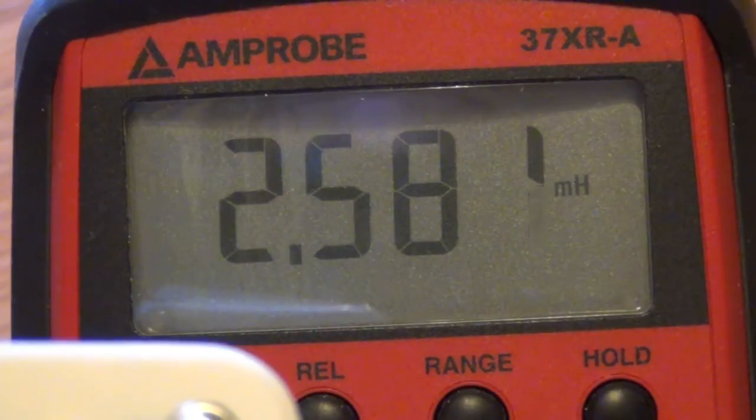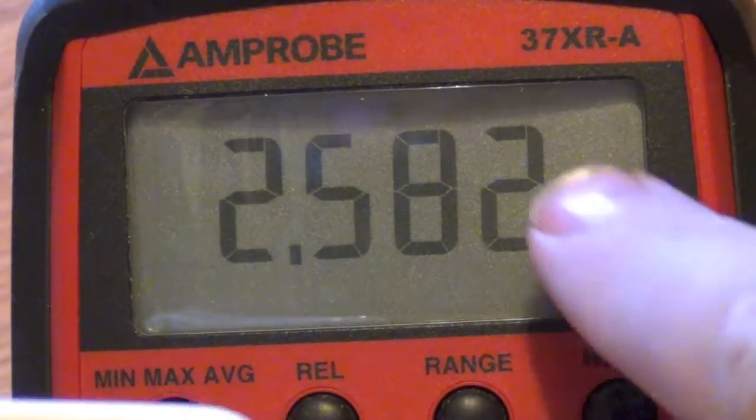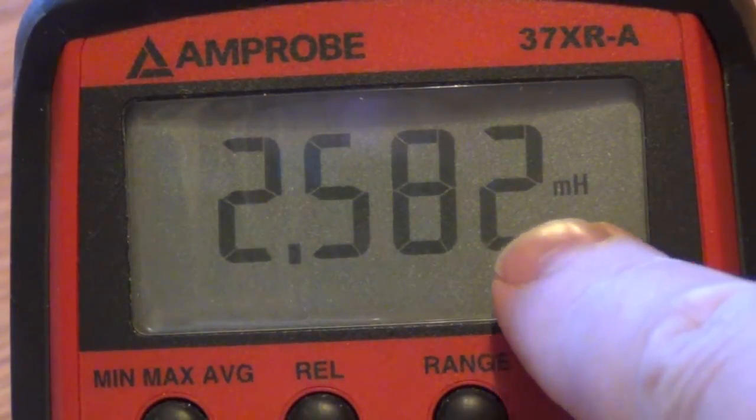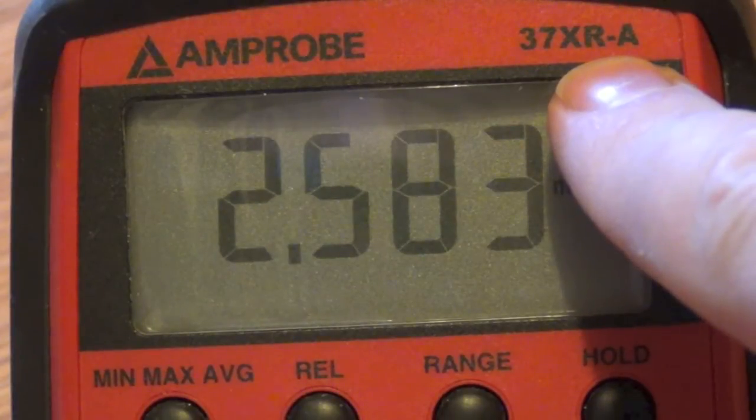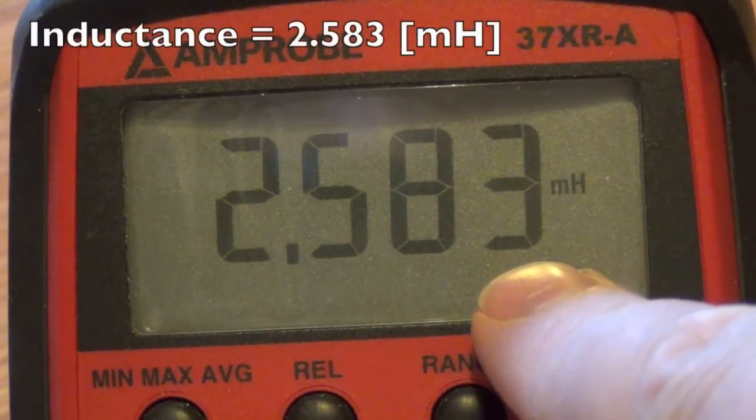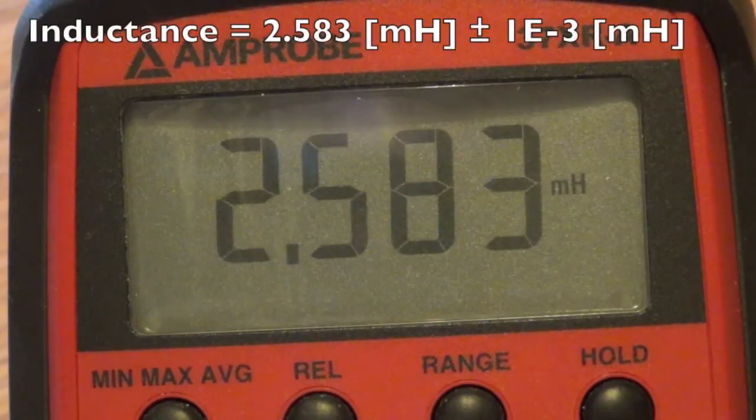And do you know the uncertainty? The simplest way to find the uncertainty is just looking at this last decimal and see how it's counting. It's also not a bad idea to check with the manufacturer to see what the specifications are. But for readability's sake, we would just record this measurement as 2.583, if it is stabilized, plus or minus 0.001 millihenrys.